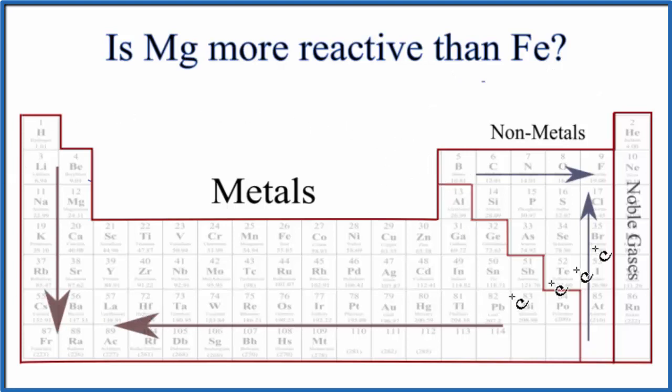As we look at this periodic table, we see this general trend. As we go this way towards the left, metals become more reactive. As we go down, they become more reactive as well. So this is a very reactive area of the periodic table.